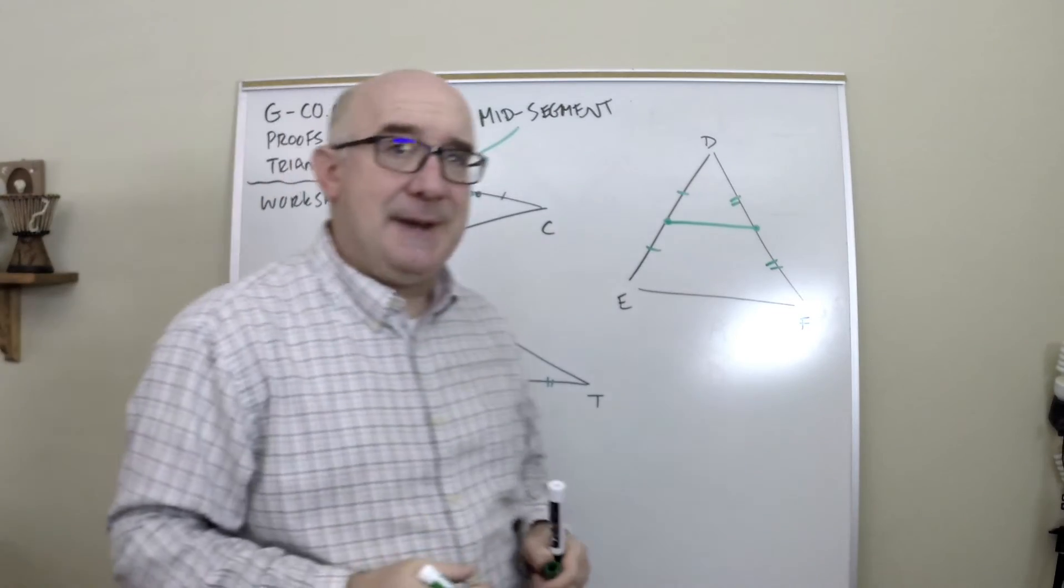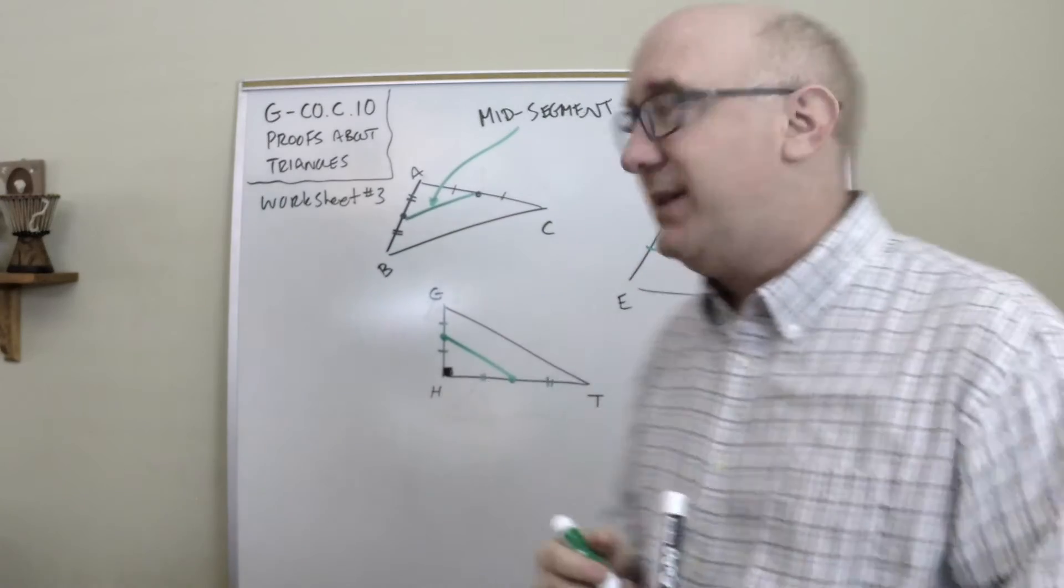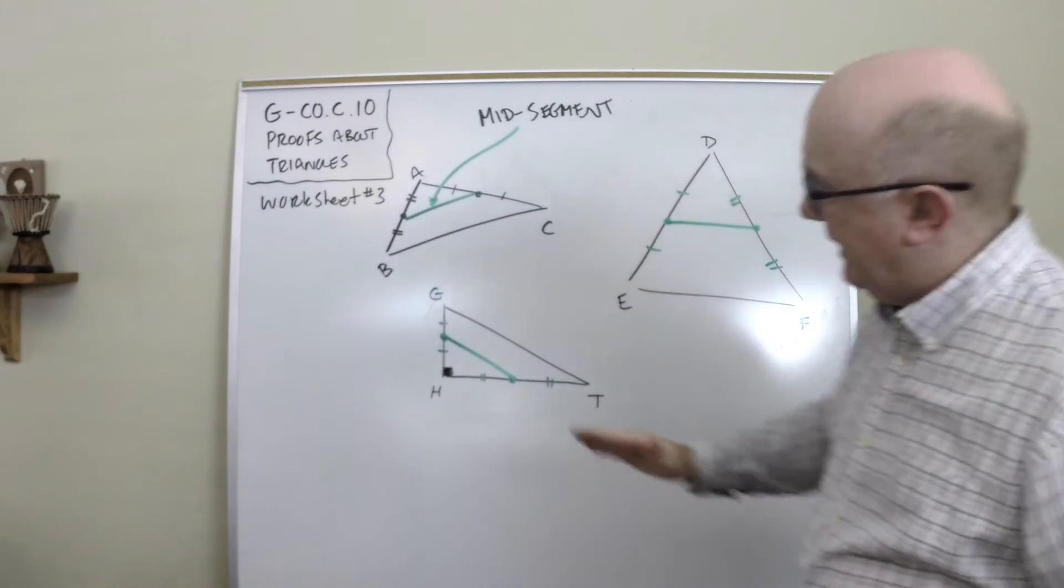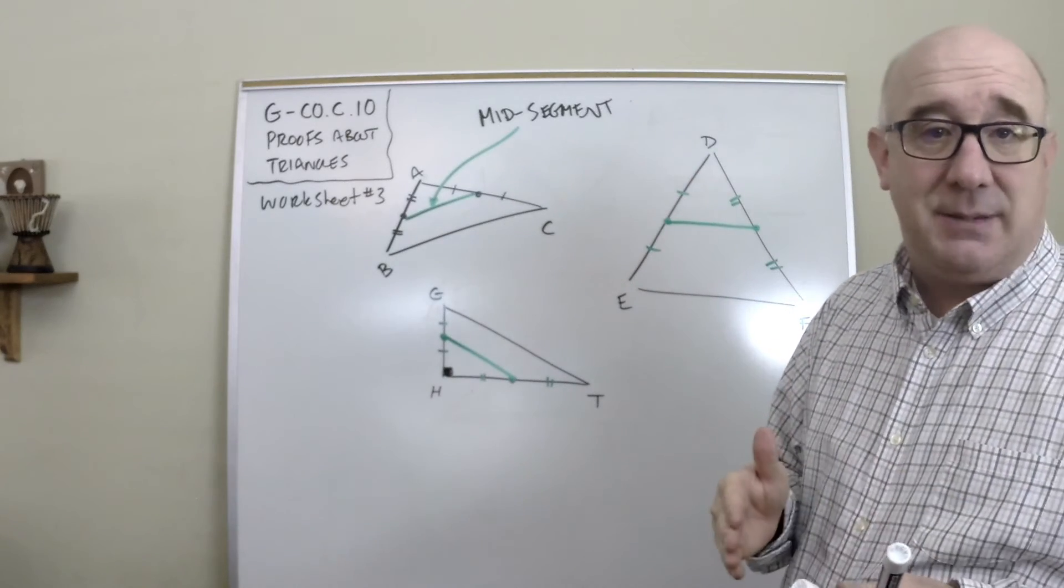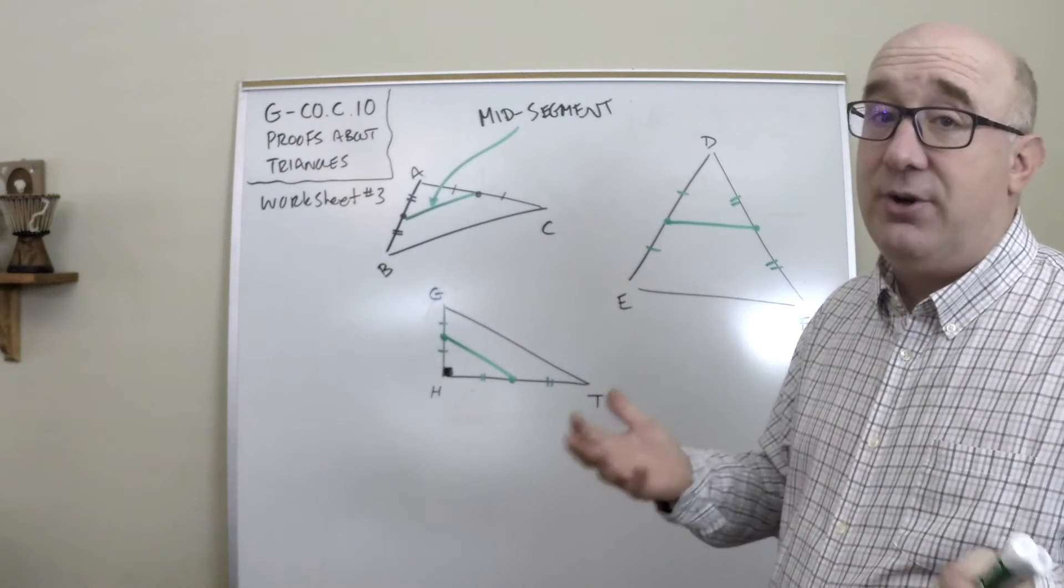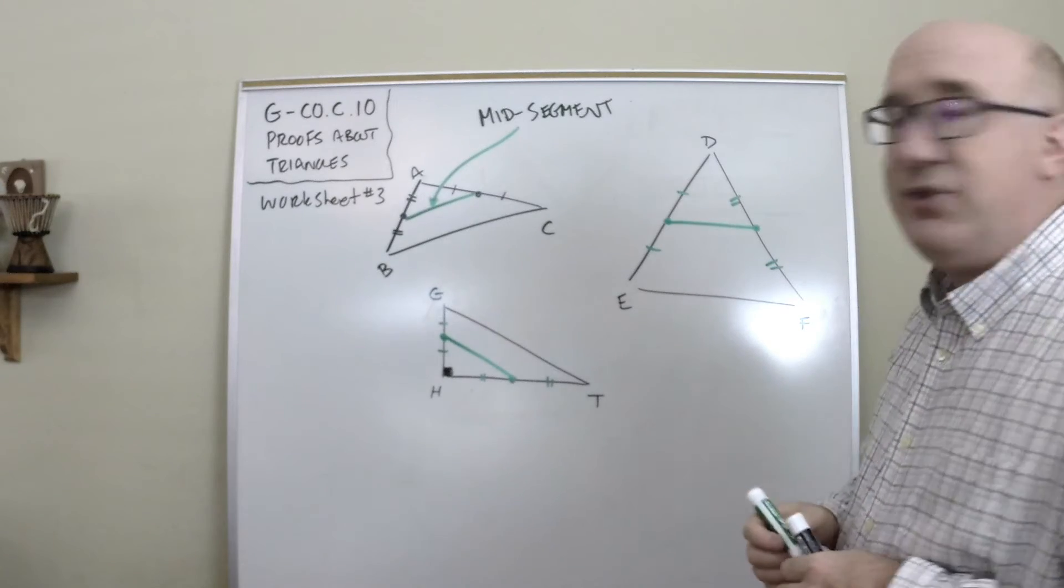Now, immediately, I think students look and can see at least a conjecture of what's taking place. They can see that the two lines, the mid-segment and the other side, the third side that's not being used, are parallel, and that is true.